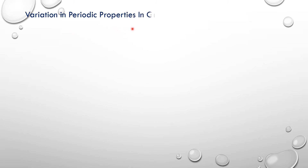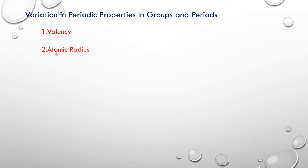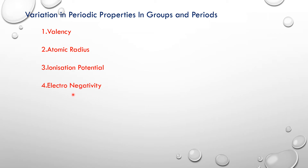Variation in periodic properties in groups and periods. What properties do we study in groups and periods? Let us discuss one by one in detail. The first property is valency. The second is atomic radius. The third is ionization potential or ionization energy. The fourth is electronegativity. These are the important trends we are going to study in periods and groups.